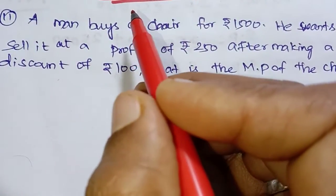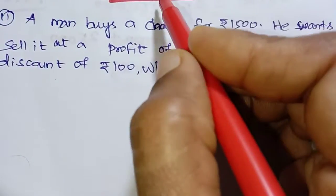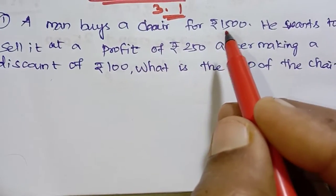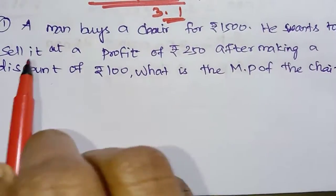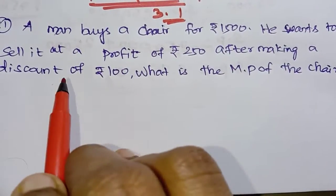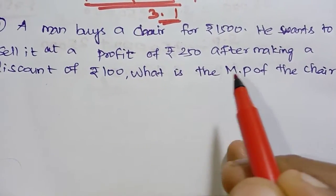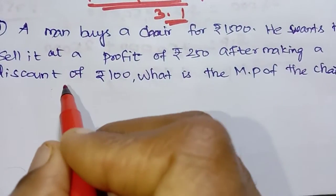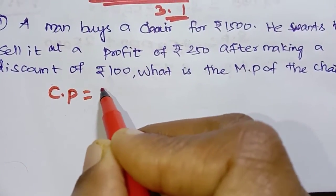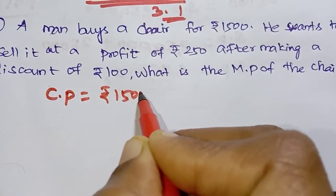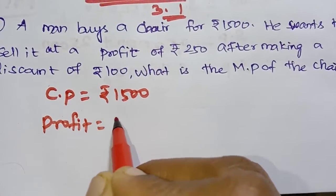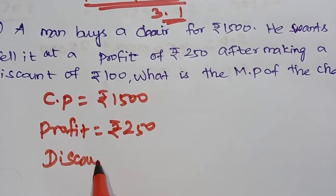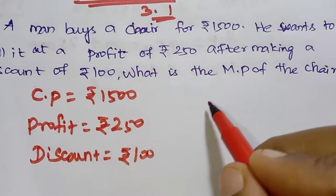In the video exercise no. 3.1, question 11: A man buys a chair for Rs. 1500. He wants to sell it at a profit of Rs. 250 after making a discount of Rs. 100. What is the marked price of the chair? So CP = Rs. 1500, profit = Rs. 250, discount = Rs. 100.